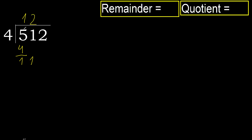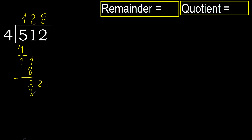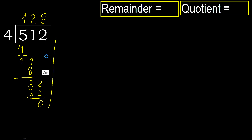4 multiplied by 2 is 8 — not greater. Subtract. Next: 32. 4 multiplied by 8 is 32 — not greater. Subtract. Next: there is no number, therefore finish.